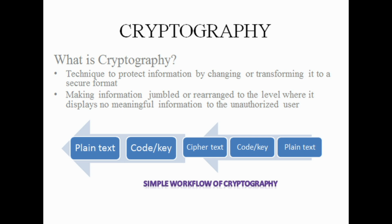A cipher text is something which is jumbled or rearranged into a format that displays no meaningful information, especially for unintended or unauthorized users. There is also one specific type of cryptography wherein the information is converted into special symbols, and that information is near impossible to reverse back to the original.